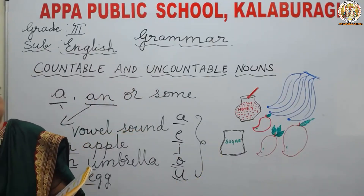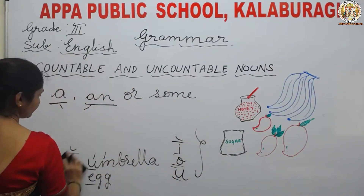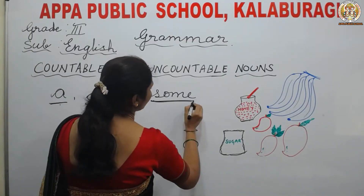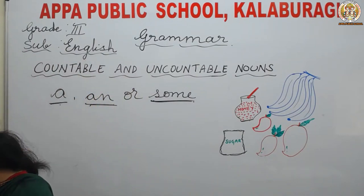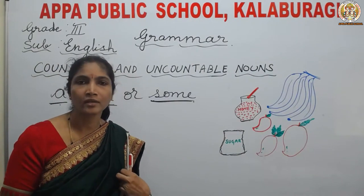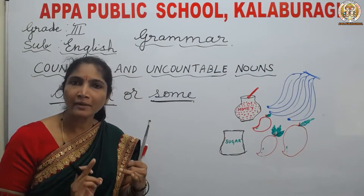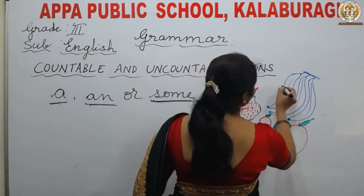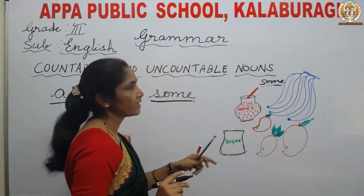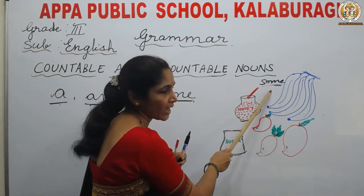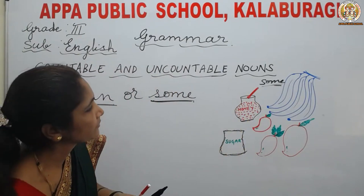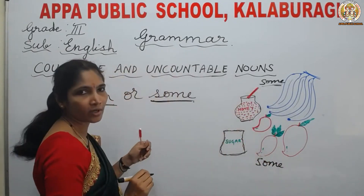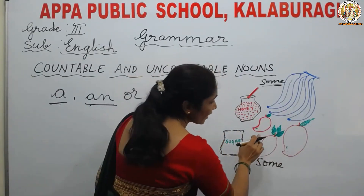How to use some? We use some when there is more than one of something. We have one banana — we say a banana. If we have one mango, we say a mango. But if we have more than one banana — two, three, four, any number — we have to say some bananas. In the same way, some mangoes. In the picture we have three mangoes, so we have to say some mangoes. We cannot say a mango; we have to say some mangoes.